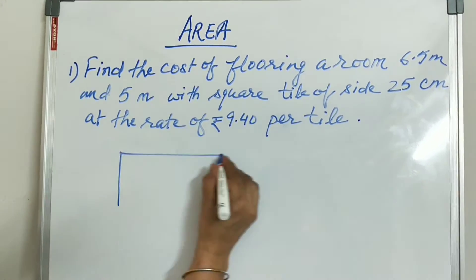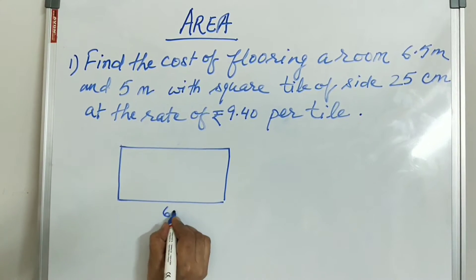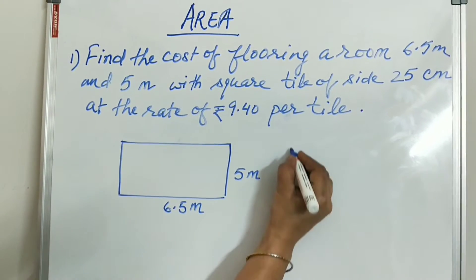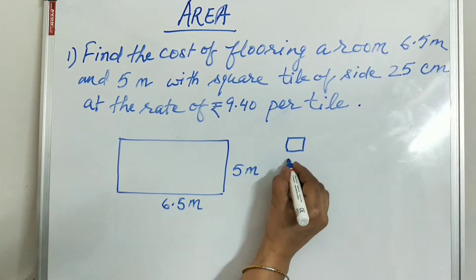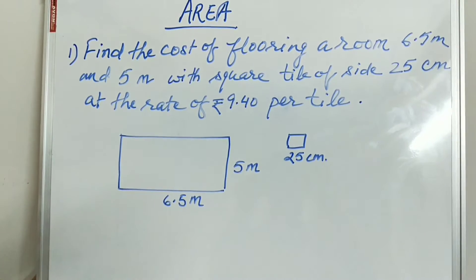That means our room is in rectangle shape, whose length is 6.5 meter and the breadth is 5 meter. And in this way, we have a square of tiles, which is 25 cm side.